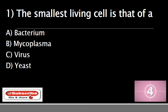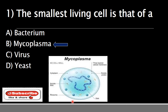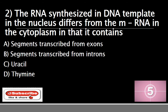The correct answer is B) mycoplasma. Cells are of different shapes and sizes due to the different functions they perform. The smallest cell is mycoplasma, also called plural pneumonia-like organism. It is about one micrometer in size. It is a genus of bacteria that lack a cell wall around their cell membrane.